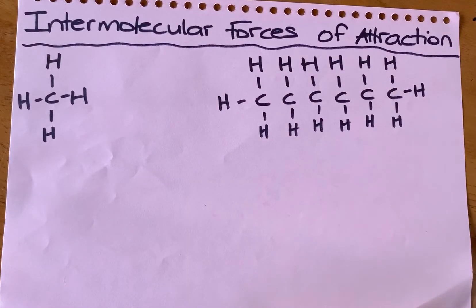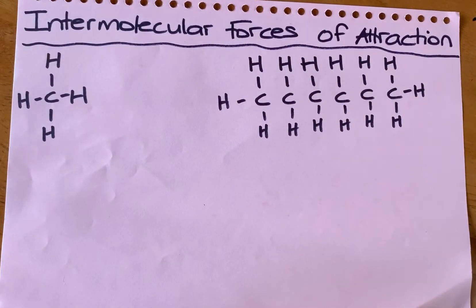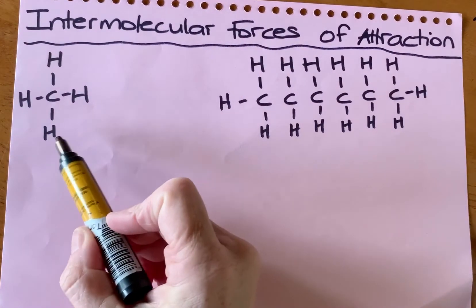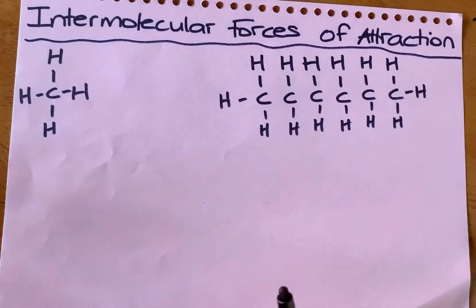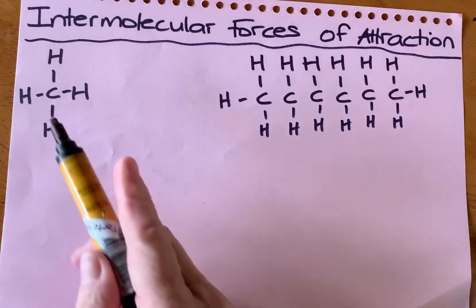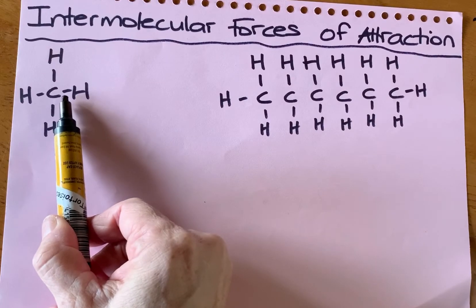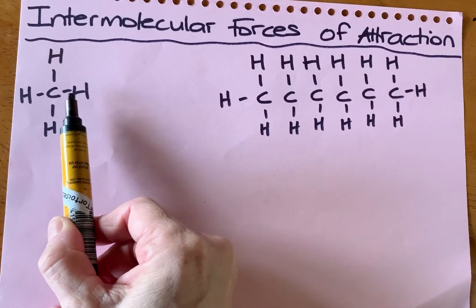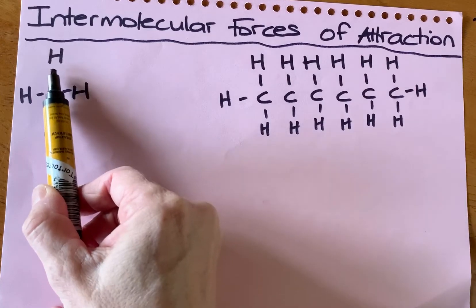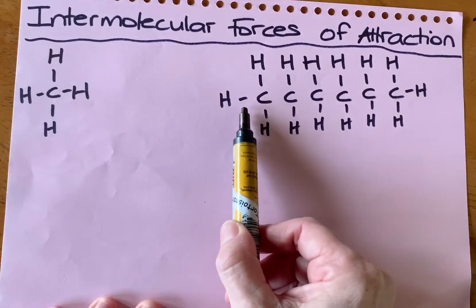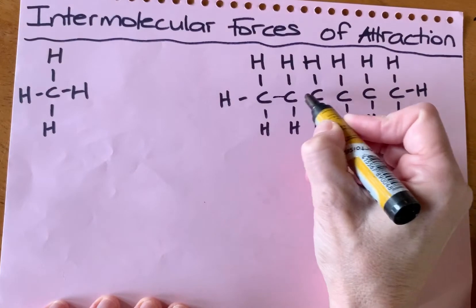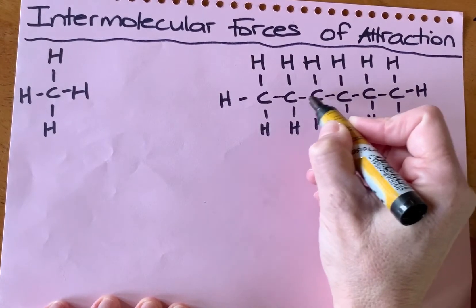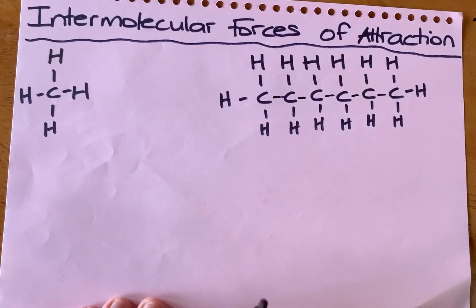I want to explain intermolecular forces of attraction. What I've drawn here is one methane molecule and one hexane molecule. When we talk about intermolecular forces of attraction, we are not talking about the carbon-to-hydrogen bond — that is a covalent bond. When you draw a black line in your structures, those are all covalent bonds. Make sure you don't miss those out because in an exam you would lose marks for that.